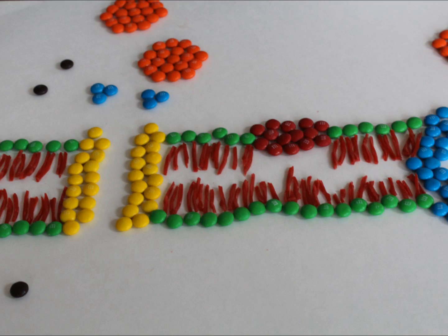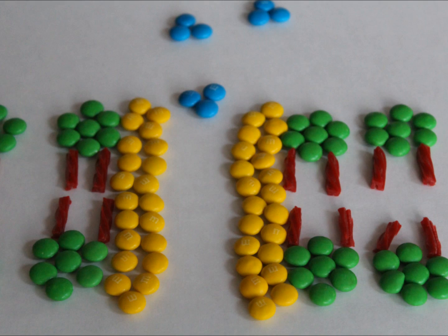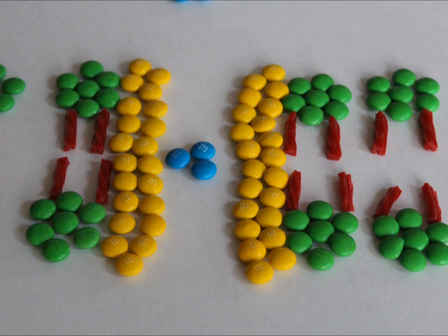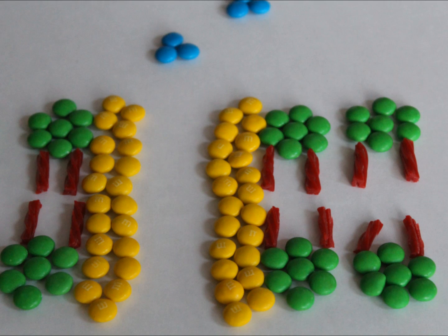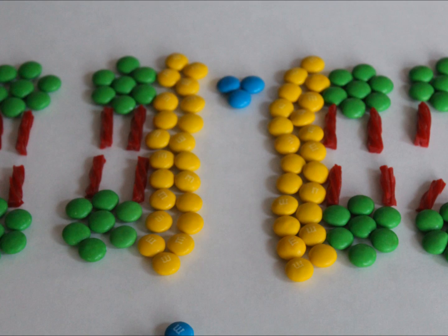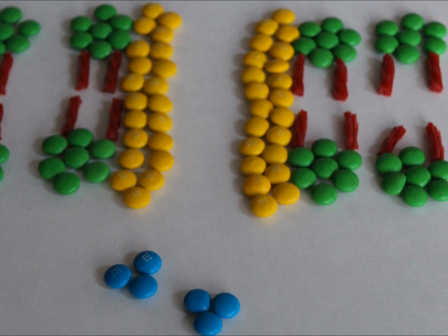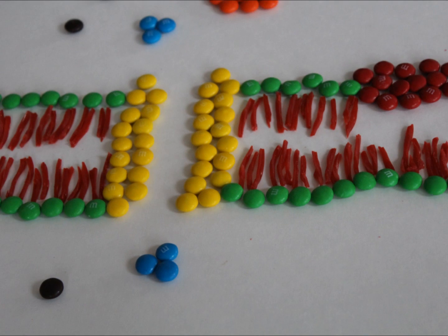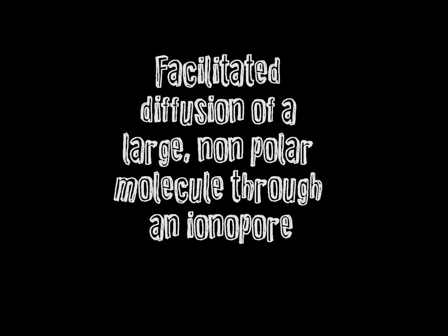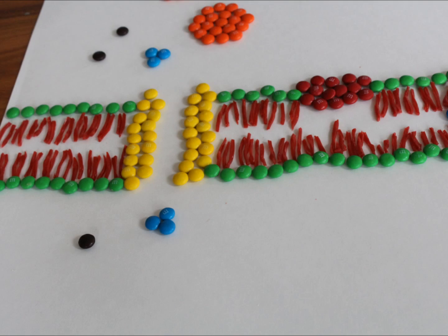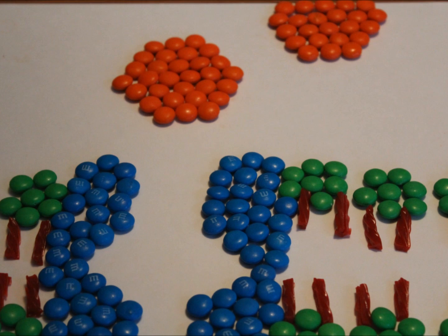Large polar substances that pass through the cell membrane are assisted by a channel protein. Facilitated diffusion is a particular type of diffusion involving a specific type of protein called an ionopore.